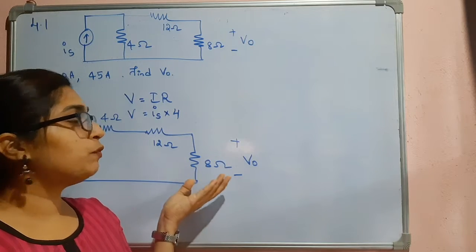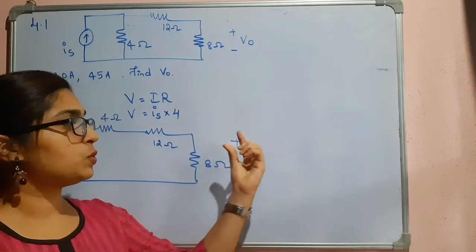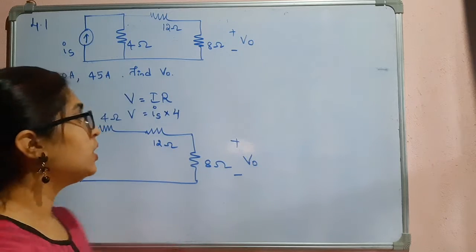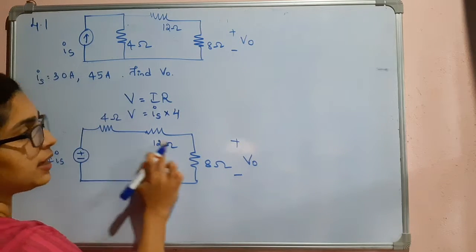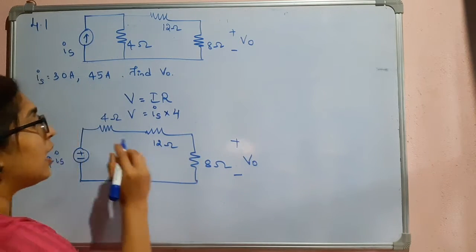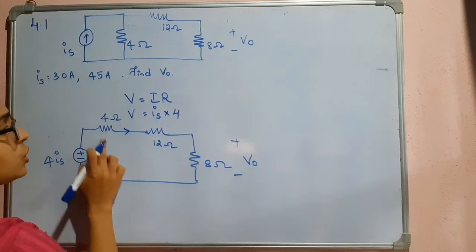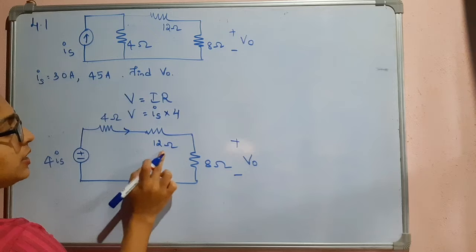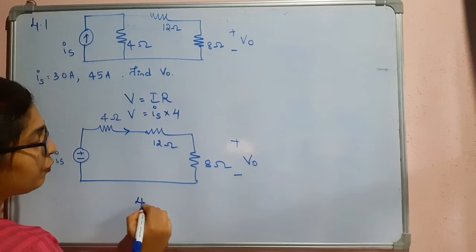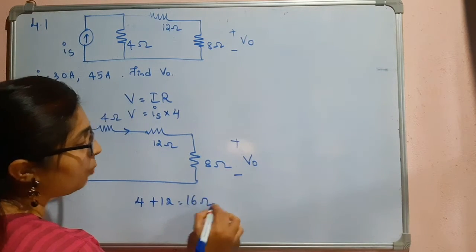The main thing is we should not disturb this 8 ohm because we are going to find the voltage across it. But now these two are in series, and you know that the same current flows through the resistances. So I will convert this to one resistance: 4 plus 12, that is equal to 16 ohm.